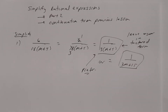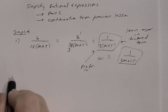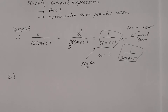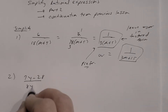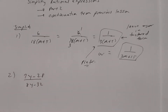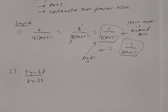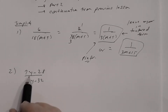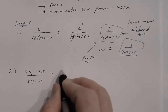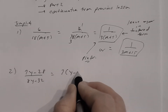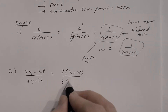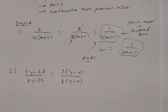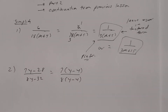Number two: we have (7y − 28) divided by (8y − 32). These are two binomials. The first step is to factor. In the numerator, the GCF is 7, so I get 7 times (y − 4). In the denominator, the GCF is 8, so I get 8 times (y − 4).